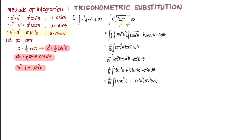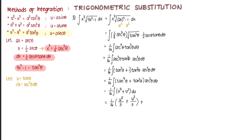We now perform simple substitution. Let u equal tangent theta, so du equals secant squared theta d theta. Substituting, we have one sixteenth times the integral of u to the power of 4 plus u squared du, which is now integrable. Integrating gives one sixteenth times (u to the power of 5 over 5 plus u cubed over 3) plus C.